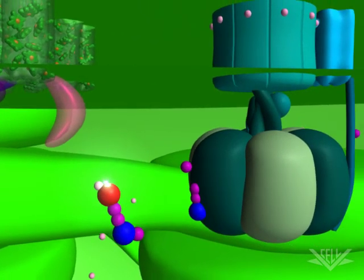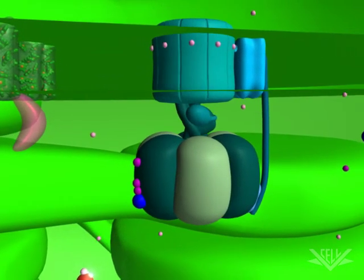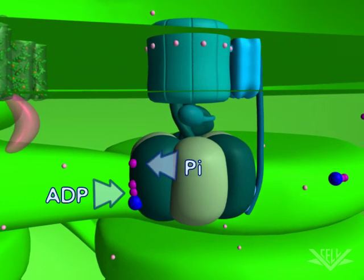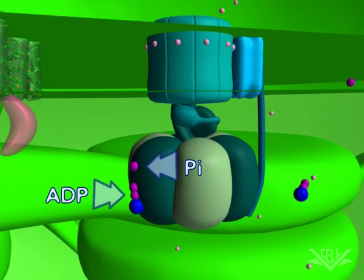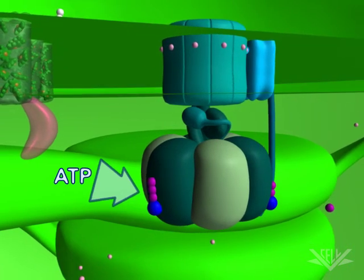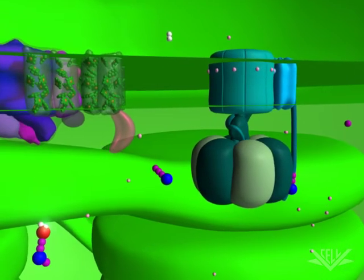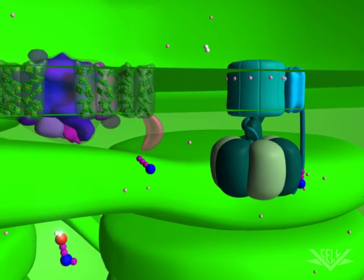The gradient created by the electron transport chain is utilized by ATP synthase to create ATP from ADP and Pi. This is similar to the way ATP is synthesized in the mitochondria. ATP, NADPH, and molecular oxygen are the final, vital products of photosynthesis.